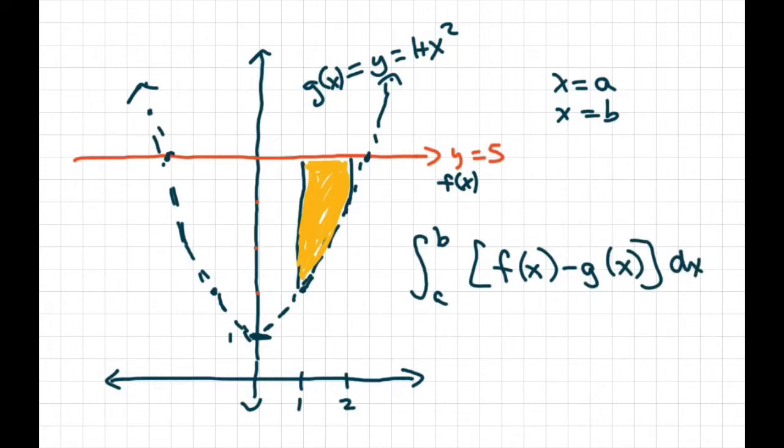Alright, so the top curve is the line y equals 5. We're going from 1 to 2, so we're going to write it as 1 to 2. Our f is going to be this where y is 5, so we just write 5.